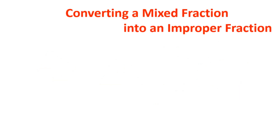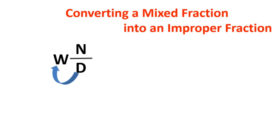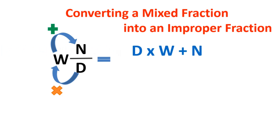Now converting a mixed fraction into an improper fraction. This is the form of a mixed fraction. To convert mixed into improper, we need one numerator and denominator. To get the numerator, multiply the denominator by the whole number, then add the resulting number to the numerator. That result becomes the numerator of the improper fraction, and the denominator stays the same.